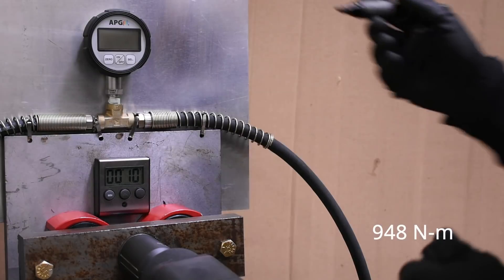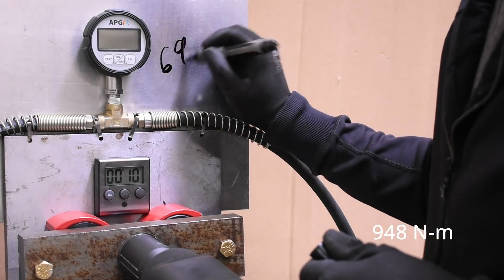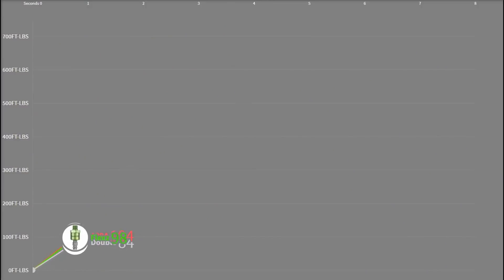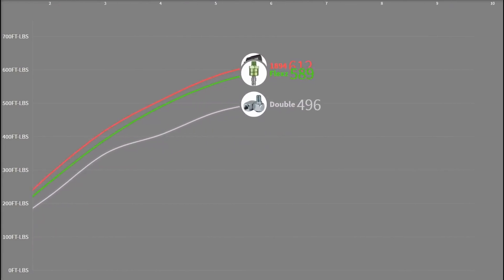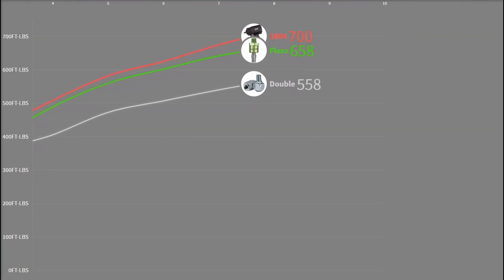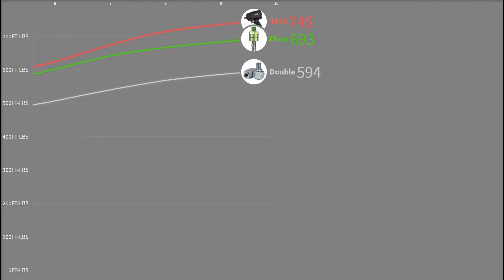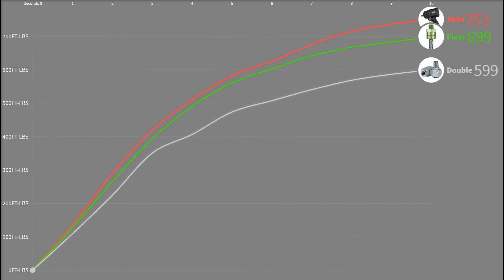699, a cool 100 foot-pounds up on the double swivel and around 50 foot-pounds down or 7 percent from the baseline run of the 1894. In both cases, the air swivel's losses opened up on this higher flowing gun from 16 to 20 percent on the double and 4 to 7 percent on the high flow Flexzilla.